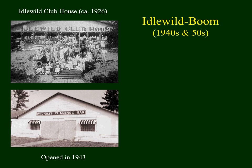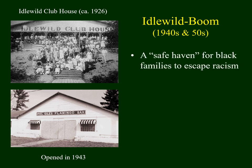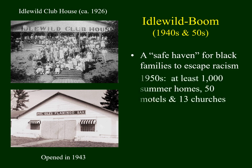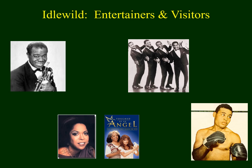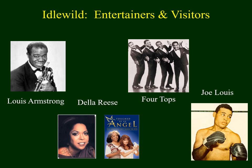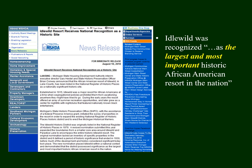Idlewild was a happening place where African Americans could actually enjoy themselves. By the 1950s, they didn't have to worry about racism and discrimination. There were at least a thousand summer homes, 50 hotels, and over a dozen churches. They were really well known for their nightclubs and live entertainment, and had several famous black entertainers and visitors. These included Louis Armstrong, Della Reese, the Four Tops when they were just starting out, and the famous boxer Joe Louis. Idlewild was recognized as the largest and most important historic African American resort in the country.